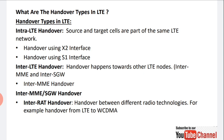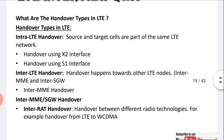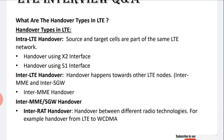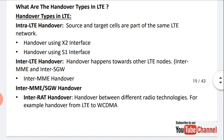Intra-LTE handover is when the source and target cells are part of the same LTE network. It can use the X2 interface or the S1 interface. Inter-LTE handover happens to other LTE nodes involving either inter-MME or inter-SGW. Inter-MME or SGW handover can be further described as inter-RAT handover — handover between different radio technologies, for example handover from LTE to WCDMA.